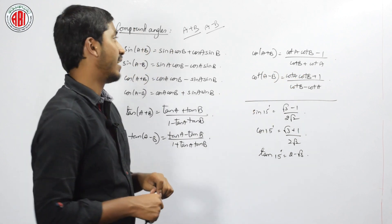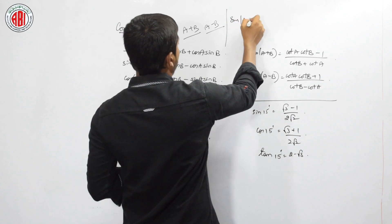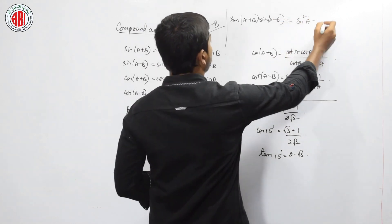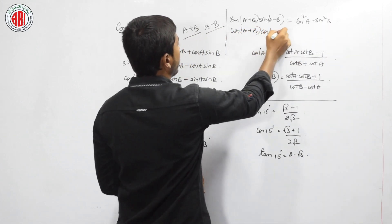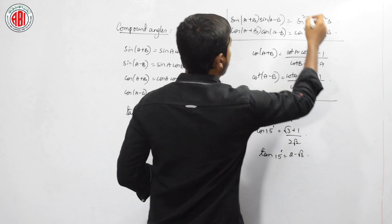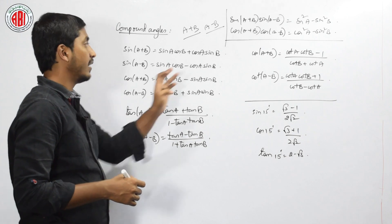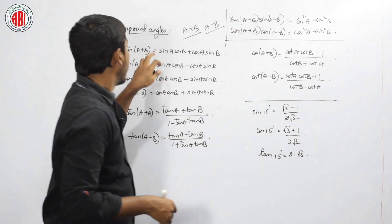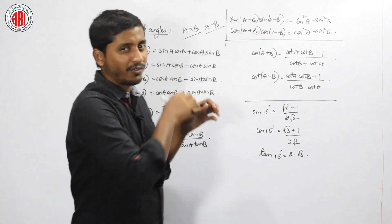There are two more multiplication formulas. Sin(a + b) · sin(a − b) is given by sin²a − sin²b. Cos(a + b) · cos(a − b) can be written as cos²a − sin²b. These are the two multiplication formulae covering addition and multiplication forms of sin, cos, tan, and cot for both a + b and a − b.